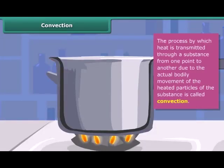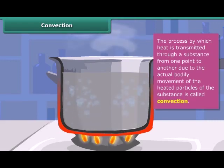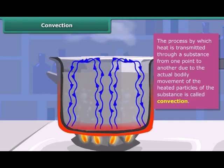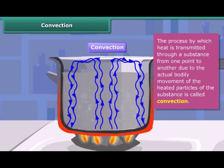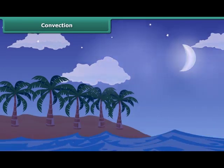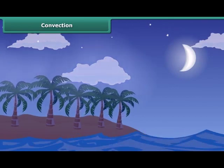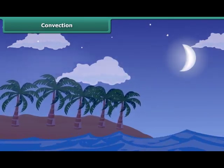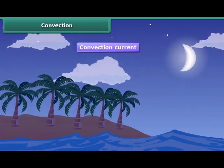The process by which heat is transmitted through a substance from one point to another due to the actual bodily movement of the heated particles of the substance is called convection. Convection of heat takes place in fluids — that is, liquids and gases — and involves the movement of matter from hot regions to cooler regions. In convection, heat is carried by moving gases like air and by moving liquids like water. A movement of air which carries heat from a warmer place to a cooler place is called a convection current.